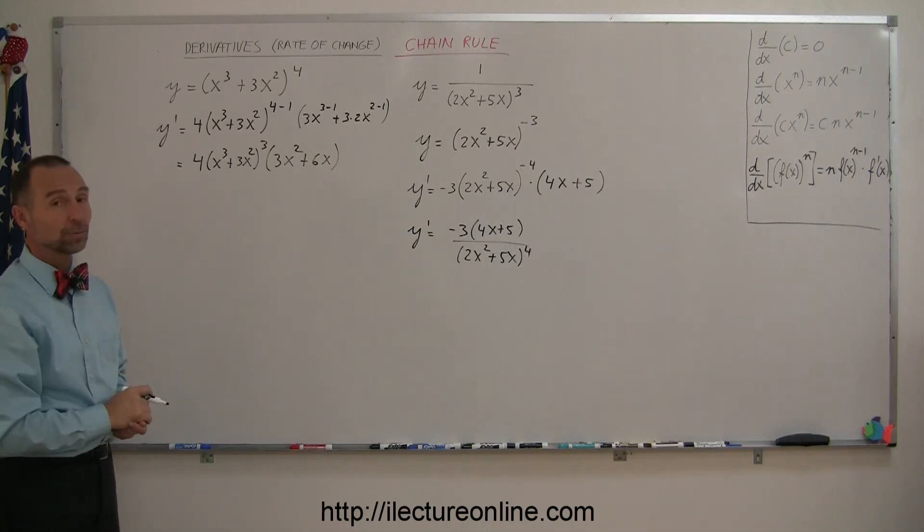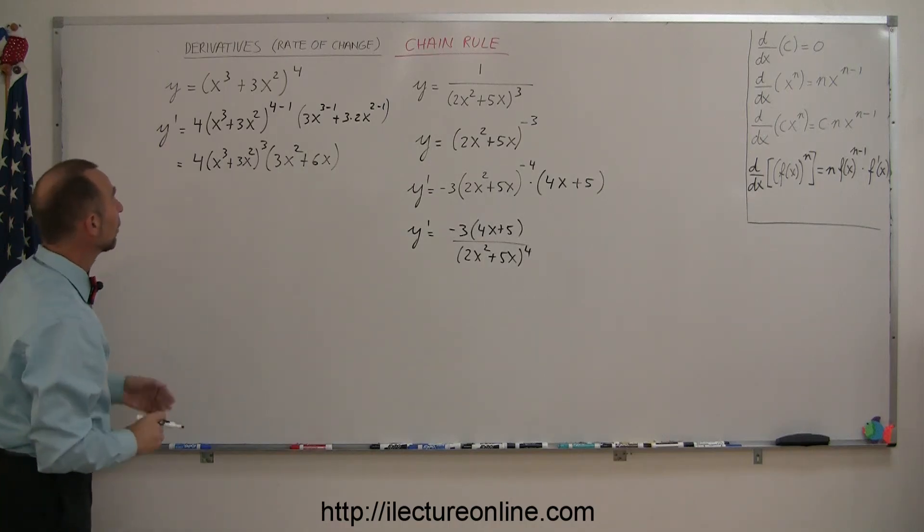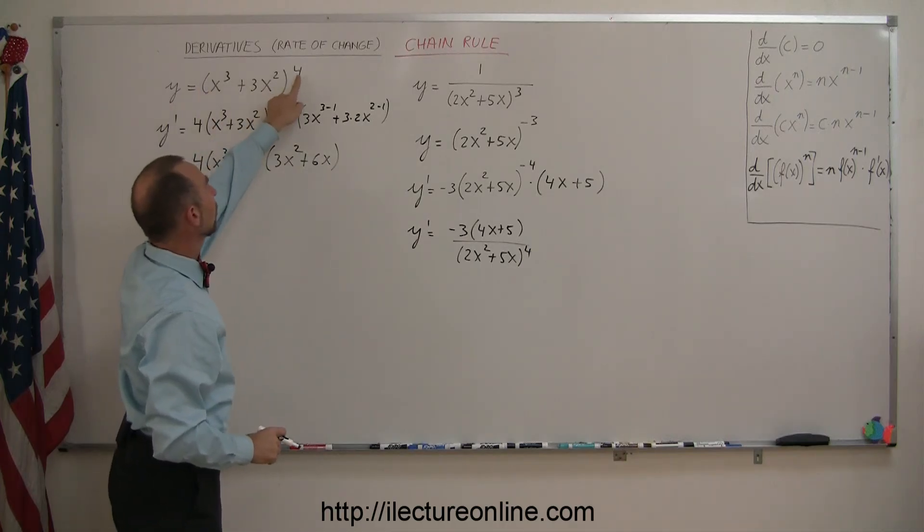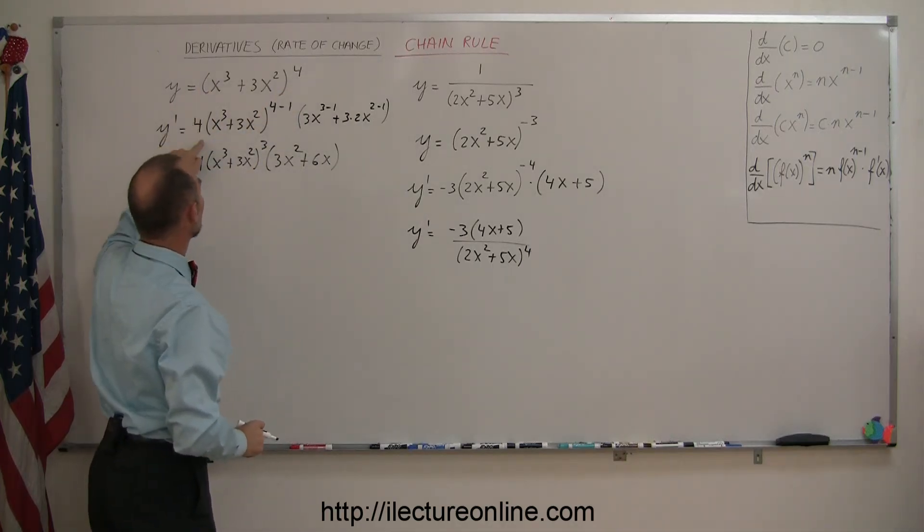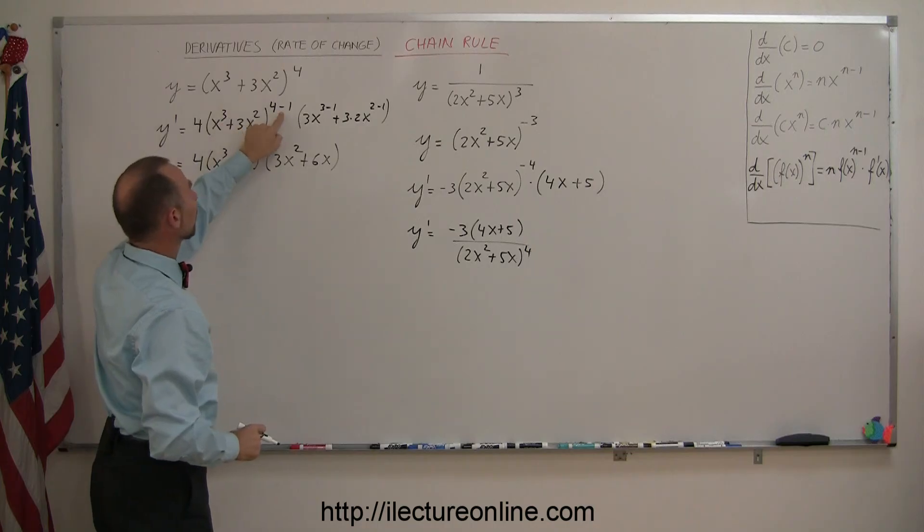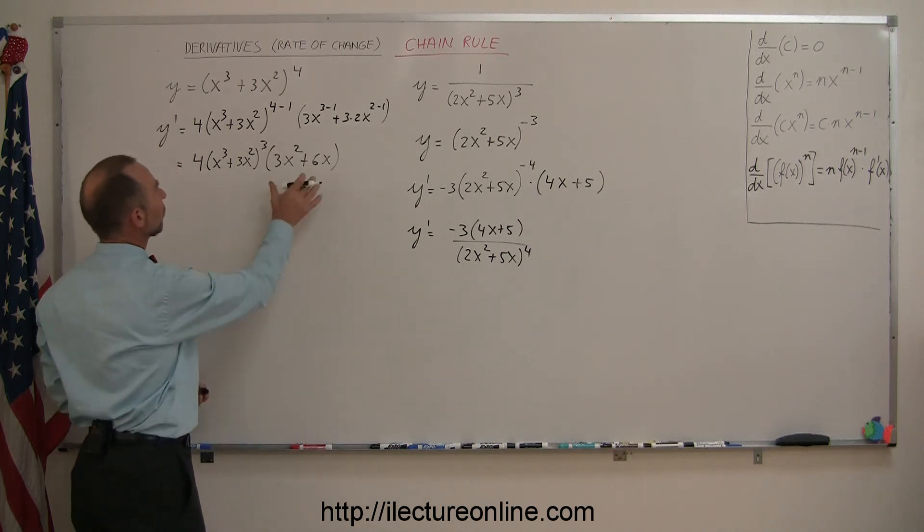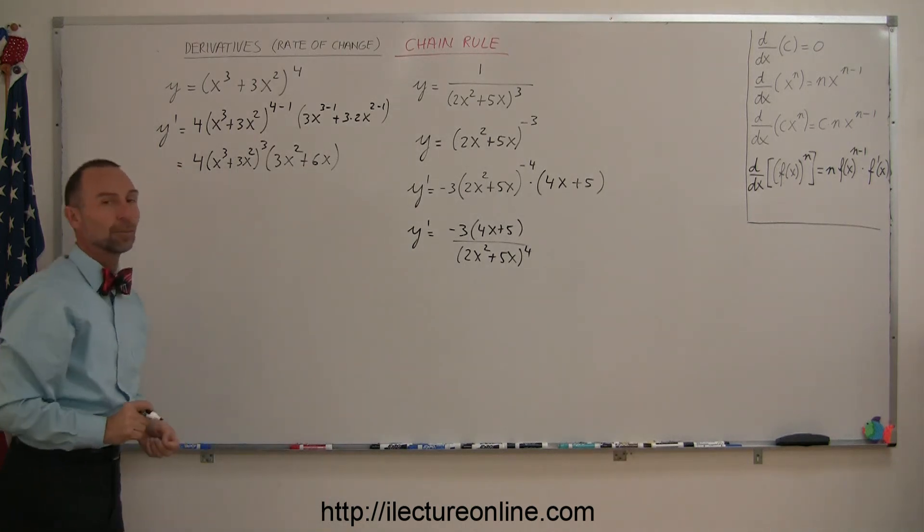So that's how you apply the chain rule. Just again, a little summary. Whenever you have a problem like this, where you have a function of x raised to some exponent, you bring the exponent to the front, write the function to the exponent minus 1, and then you multiply that times the derivative of what's inside the parentheses, the function of x, like this. And of course, you have the exponent minus 1, so you rewrite it in that form right there.